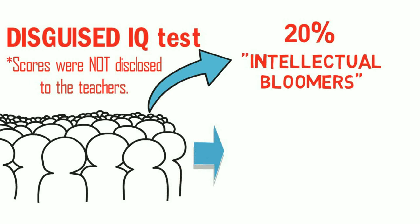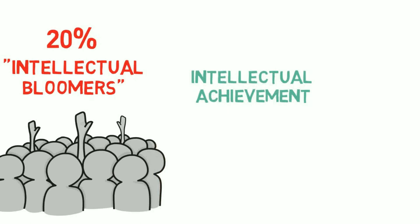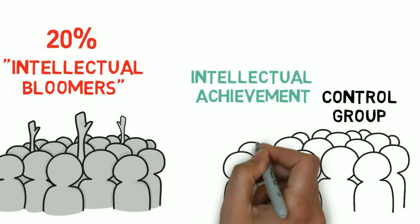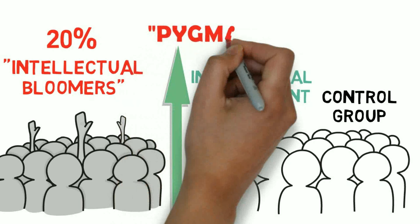Then, Rosenthal and Jacobson randomly selected the supposed intellectual bloomers, who differed only in terms of the expectations that teachers were told to have for them, and disclosed their names to the teachers. By the end of the school year, all students were given again an IQ test with the same questionnaire used at the beginning of the study. Interestingly, the supposed intellectual bloomers had gained significantly in intellectual achievement compared to the control group and performed way better. This self-fulfilling prophecy has been called the Pygmalion Effect.